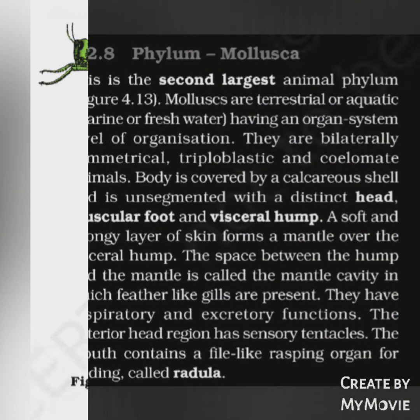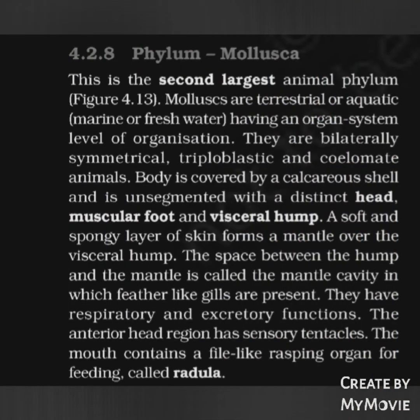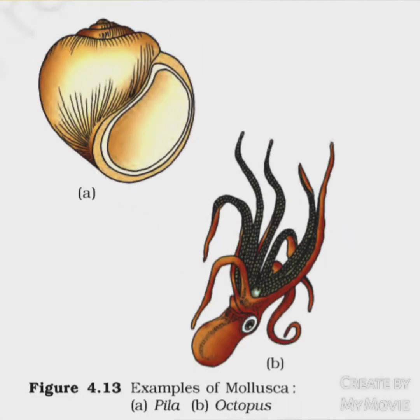Phylum Mollusca: This is the second largest animal phylum. Molluscs are terrestrial or aquatic (marine or freshwater) with organ system level of organization. They are bilaterally symmetrical, triploblastic, and coelomate. The body is covered by a calcareous shell and is unsegmented with a distinct head, muscular foot, and visceral hump. A soft spongy layer of skin forms a mantle over the visceral hump. The space between the hump and mantle is the mantle cavity, which contains feather-like gills for respiration and excretion. The anterior head region has sensory tentacles. The mouth contains a file-like rasping organ for feeding called the radula. Examples: Pila, Octopus, Sepia, Loligo, and Aplysia.